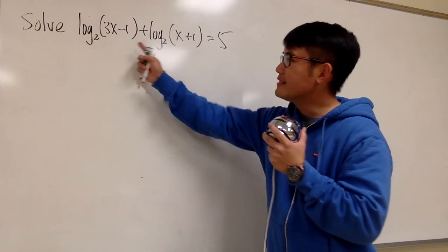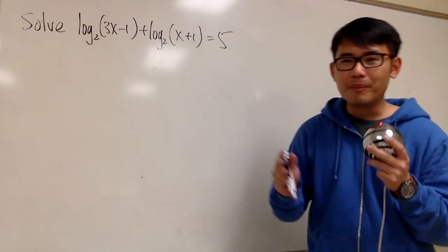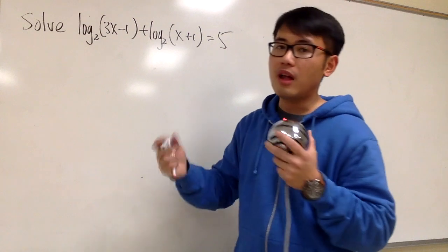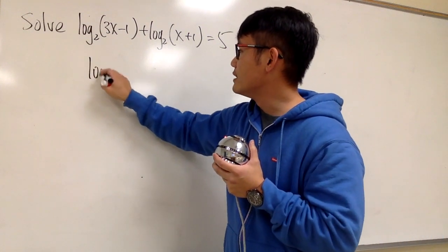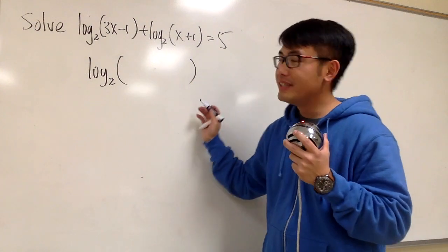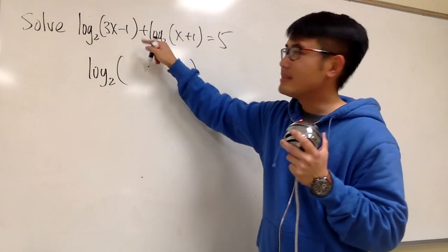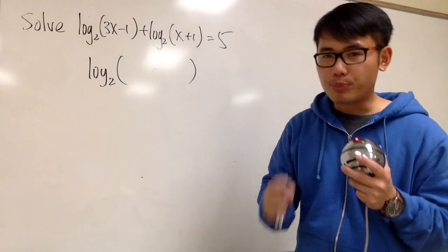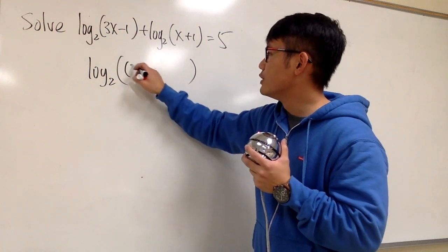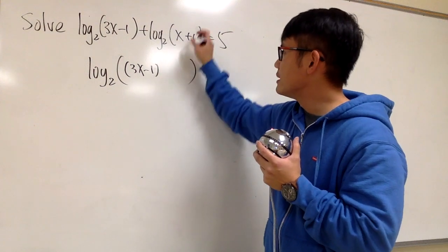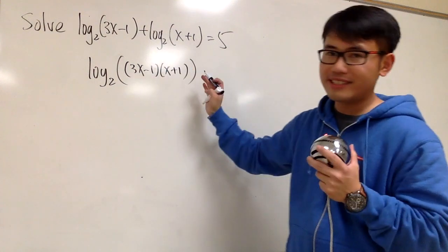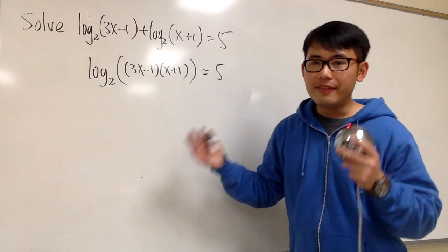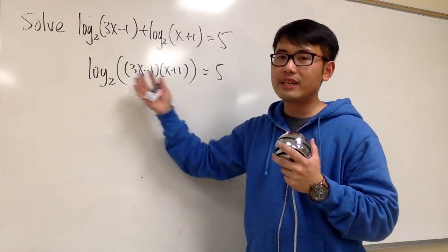Here's the second example. This time we only have two logarithms on the left-hand side, and still we have to combine them into just one. We have addition in between, and the good thing is they are both log base 2. We know we can put down one single log base 2 and open the big parentheses. Because it's addition inside, we multiply the two things together. We write this down as (3x minus 1) times (x plus 1). This is just the log property, and this equals 5. You can either multiply this out first or get rid of the log first — up to you.